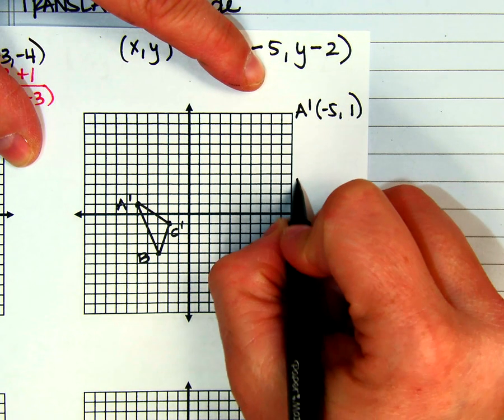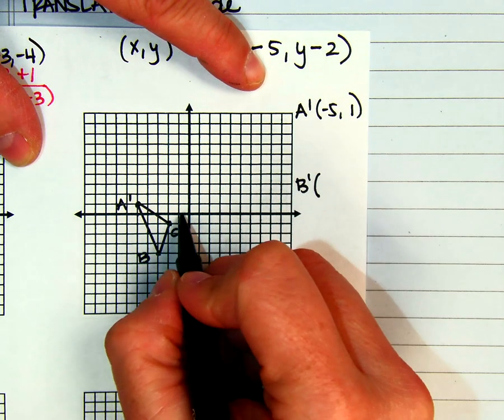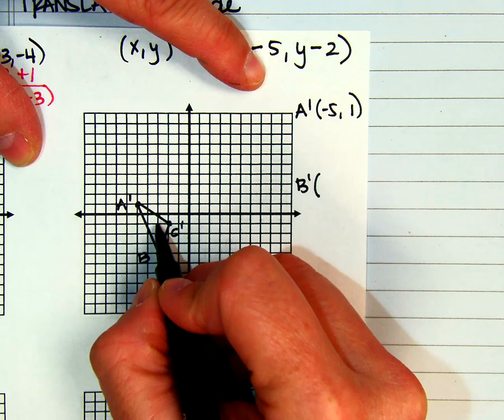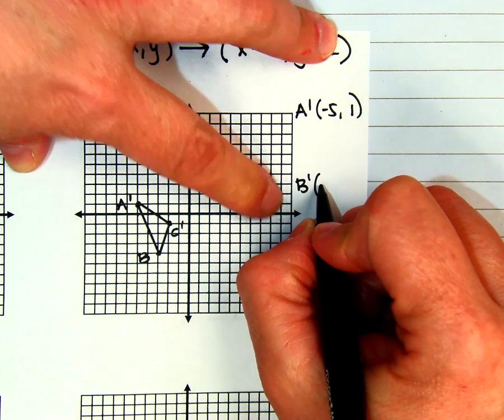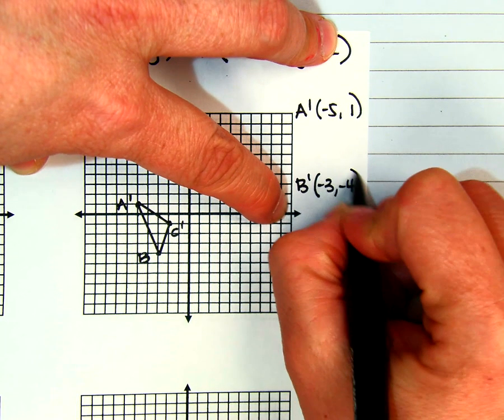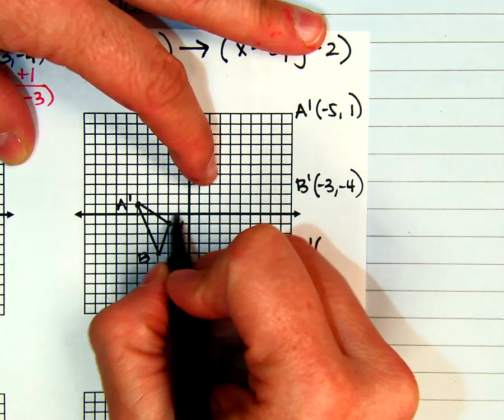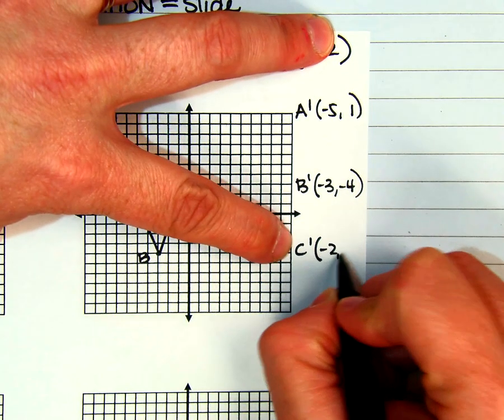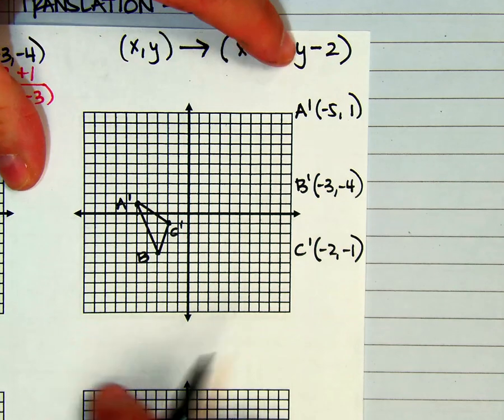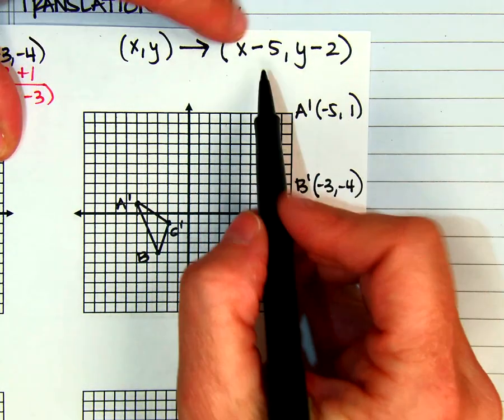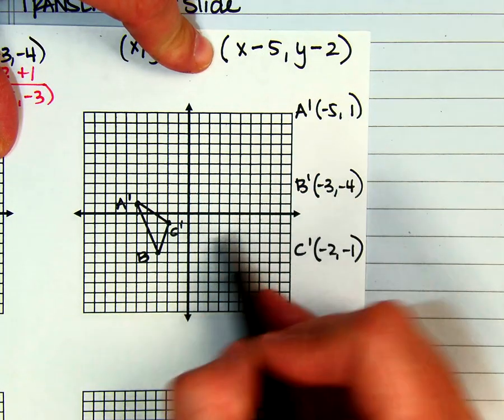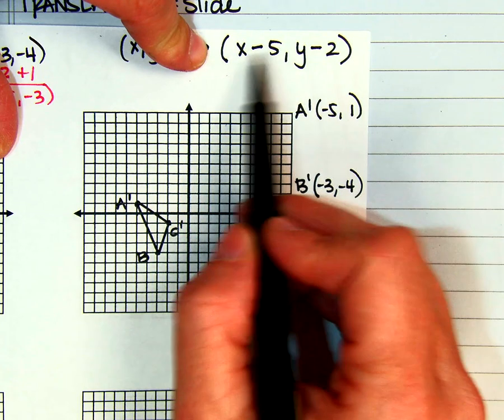I'm going to leave a little space here. B prime is at (-3,-4). And C prime is at (-2,-1). Well, I'm going backwards. So somewhere up here is where my original figure is going to be.